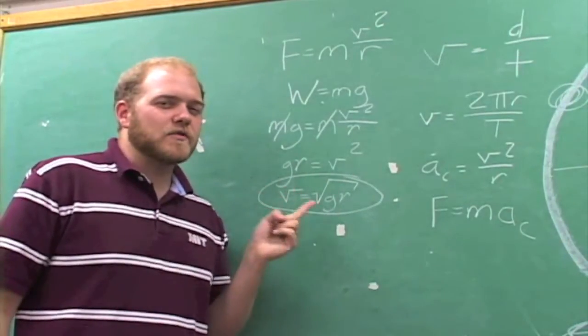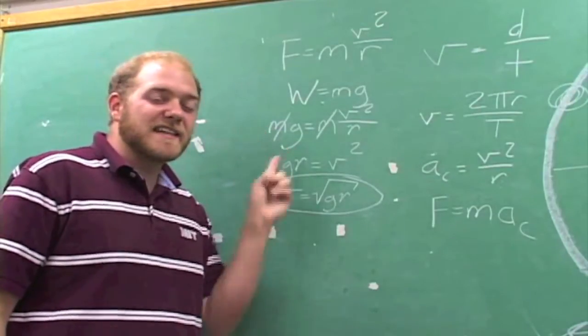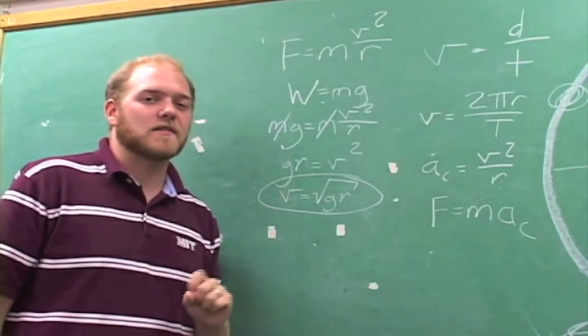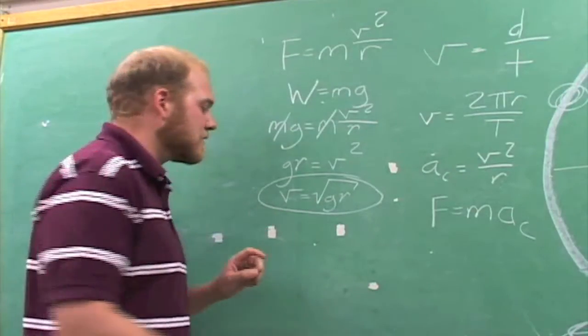Now, this is interesting. It shows that the mass of our point mass astronaut doesn't have an effect on how fast the centrifuge needs to spin to get a 1g force. That really simplifies things for us.